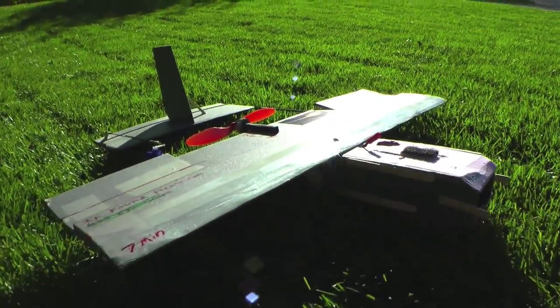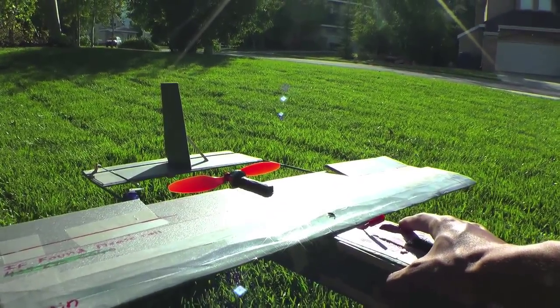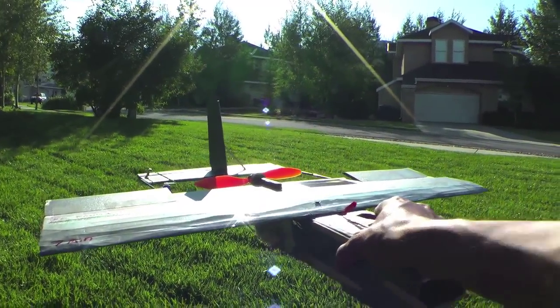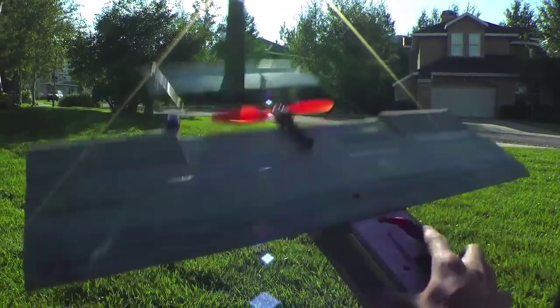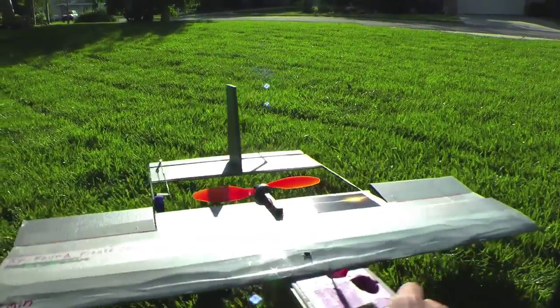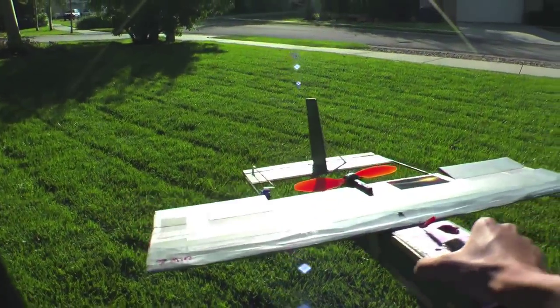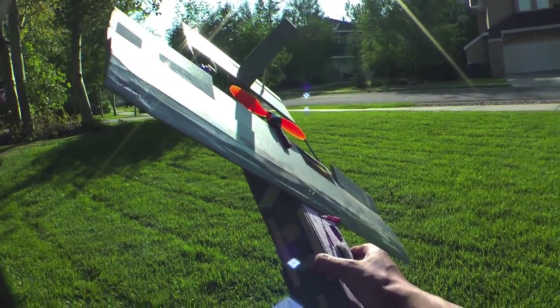Basically what the FY30A does is takes the direction of the plane and locks it in. So if your plane is pointed this way, coming this direction, your plane won't move from wind gusts, it won't tip up and down because of hitting thermals, and it won't yaw. Well, mine yawed because I don't have a rudder on it, but if you do have a rudder, you can connect that to the FY30A and it'll keep all axes locked in.